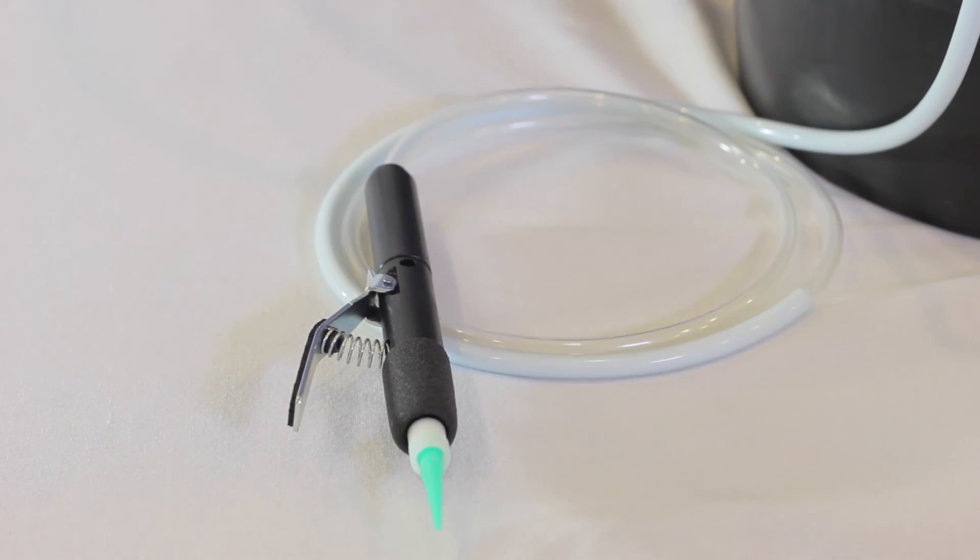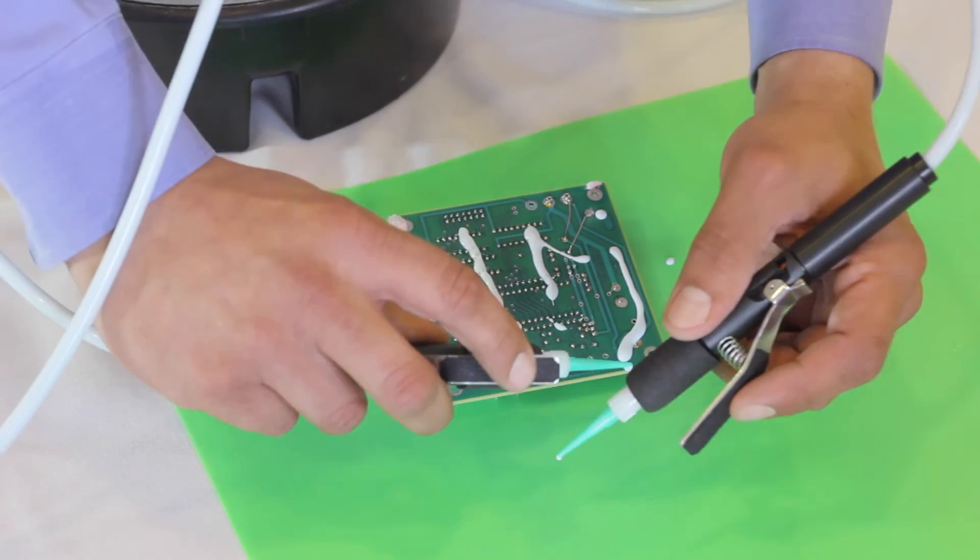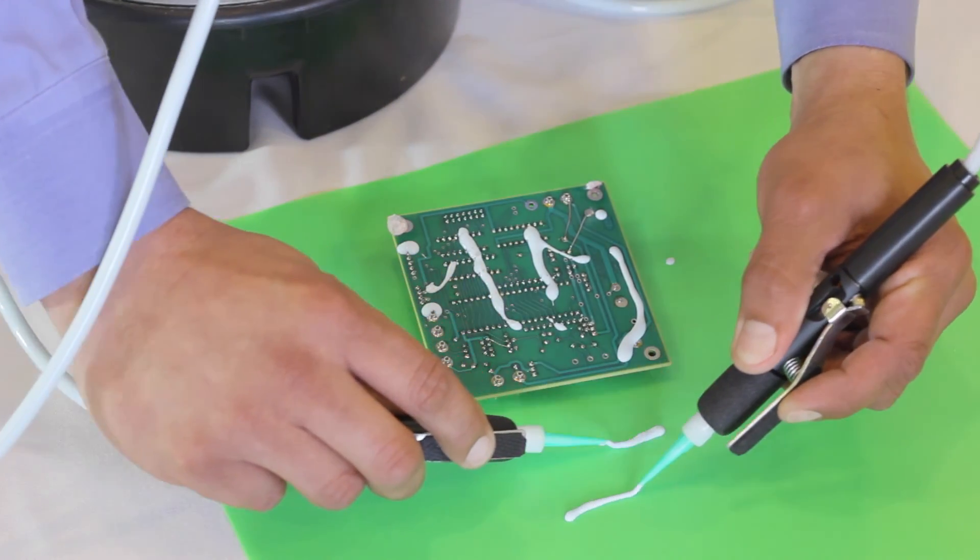Once you have your desired pressure and flow rate established, your system is now ready to start dispensing. Press the wand lever and start dispensing.